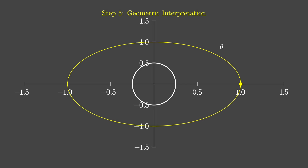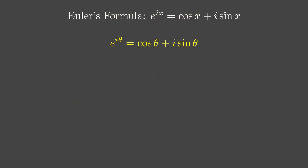Let's bring it home. We've derived Euler's formula: e to the i theta equals cos theta plus i sin theta. It's a bridge between exponentials, trigonometry, and the complex plane — a true mathematical masterpiece. From the power series to the unit circle, we've seen how it all comes together. Isn't it amazing how math can connect such different ideas into one elegant equation? Thanks for joining me on this journey. Hope you're as blown away as I am.